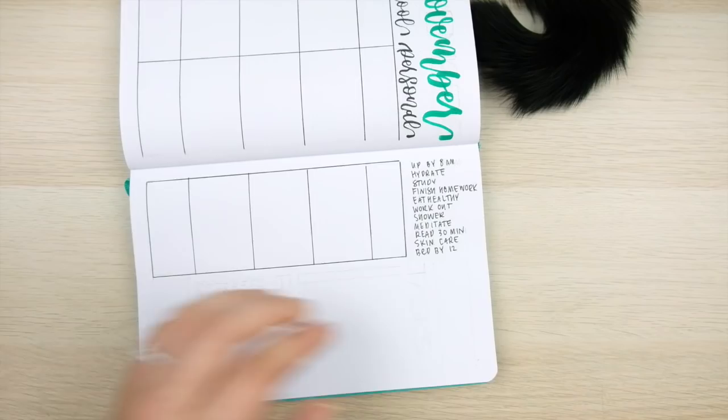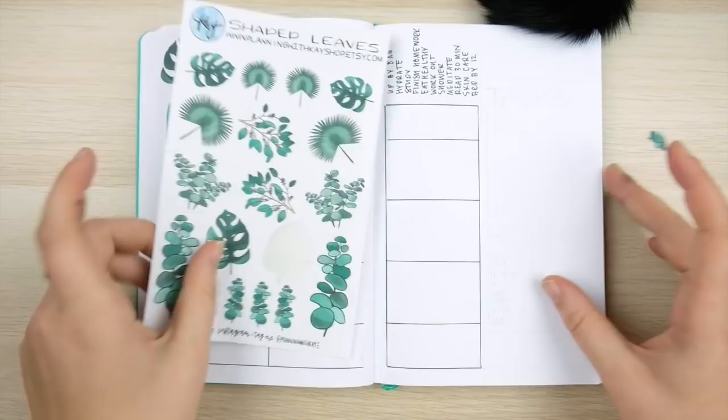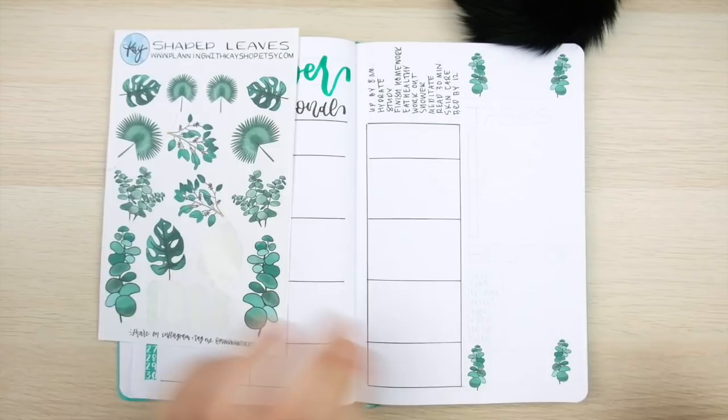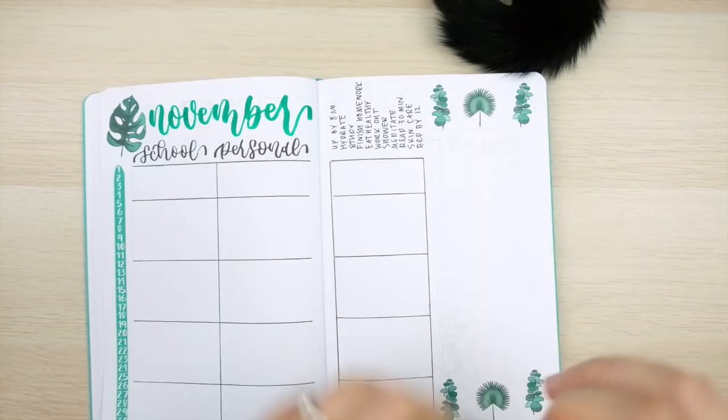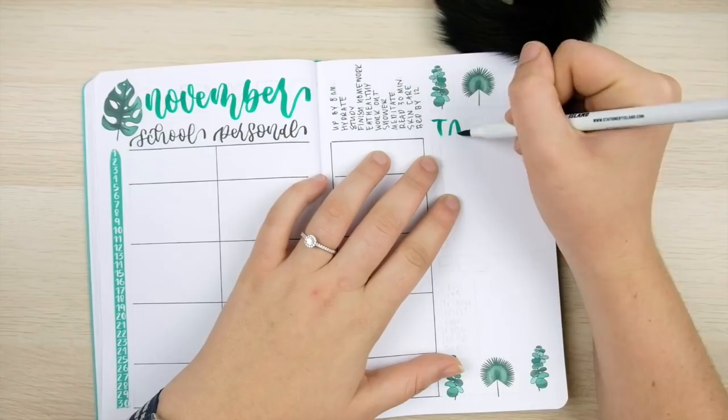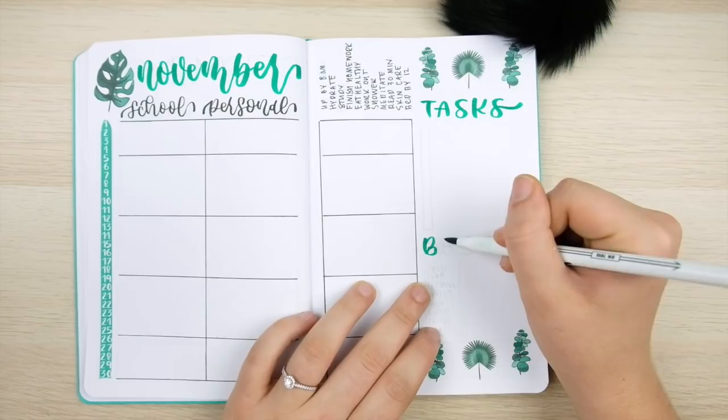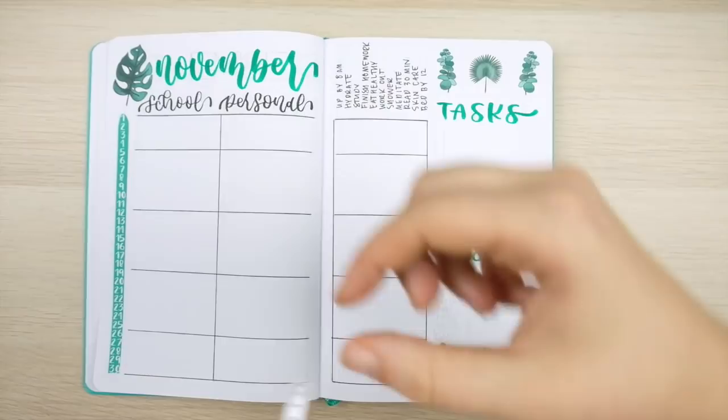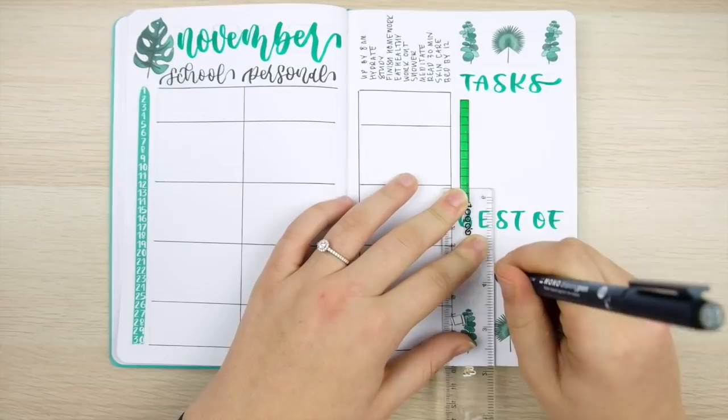Now in the remaining blank space I'm first going to create my task list section to jot down all of the to-do list items for the month. Then below that I'm gonna have a section called Best Of which is essentially for listing all of your favorites throughout the month, meaning the favorite movie you saw that month, favorite song, show, book, etc. And this will provide a really cute little snapshot of what you were really into that month.